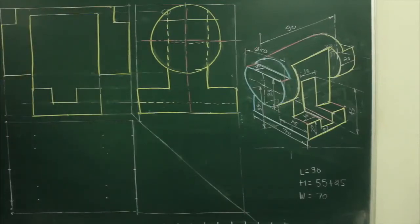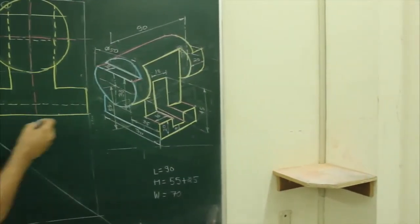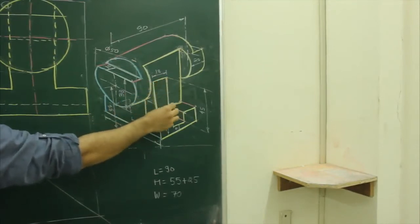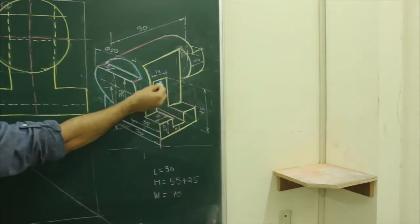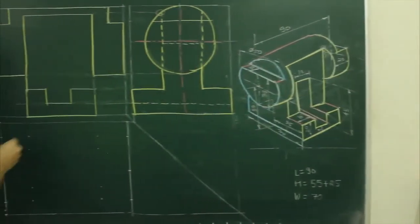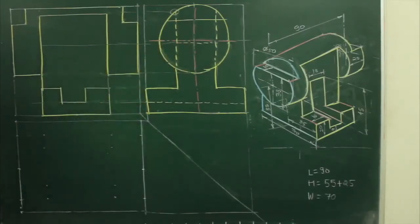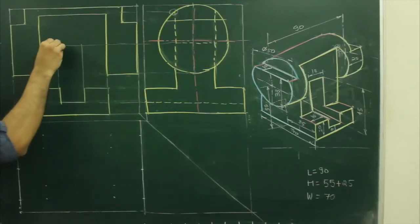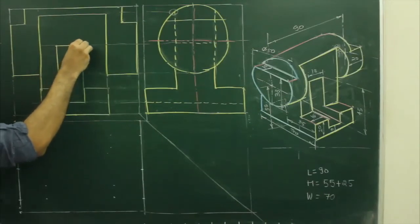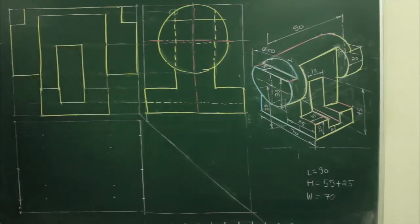There is one more thing: if you see in the main diagram, the height of this part from the bottom is 9 plus 45, so we can project that from the side view as well. Extend from here and here, and this part would be the required front view of that slot. We are done with the front view.